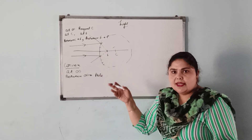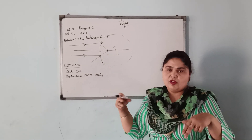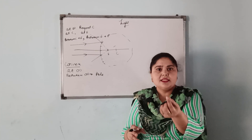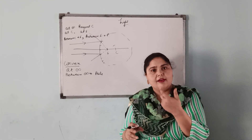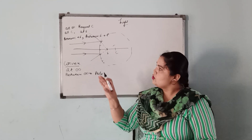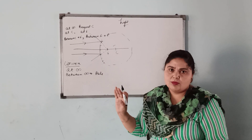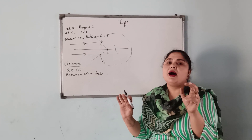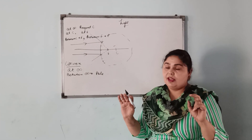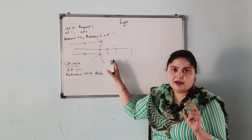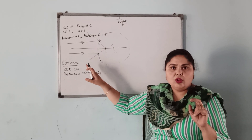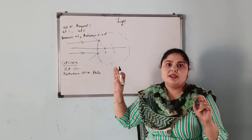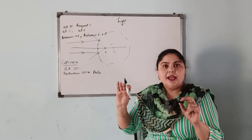It is also a point size image, so we cannot say it is inverted or erect. A point size image can never be inverted or erect. So we can say the image is highly diminished. The image is virtual, formed on the other side of the mirror, and it is highly diminished.